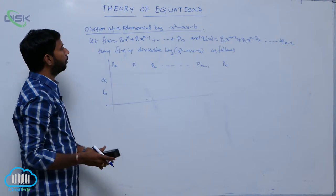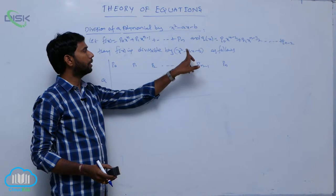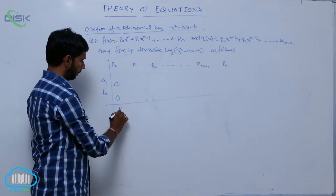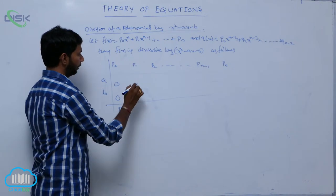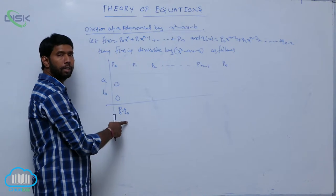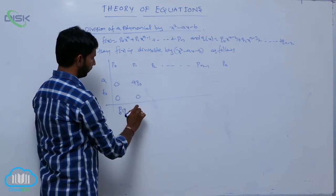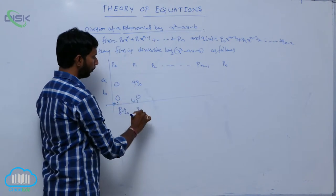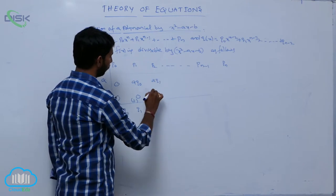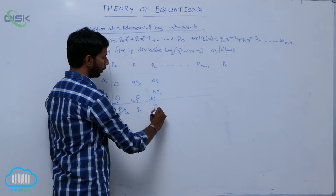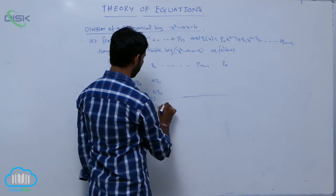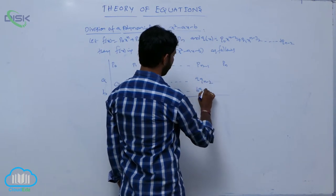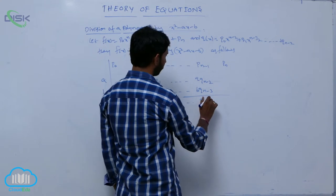The factors are a and b from x squared minus ax minus b, where the coefficient of x is negative a and the constant is negative b, considered as positive a and positive b in the scheme. Here p naught is considered as q naught. Then p one plus a times q naught is considered as q one. Next, a times q one plus b times q naught gives q two, and adding terms gives q three, continuing with a times q n minus two plus b times q n minus three considered as q n minus one, and q n.